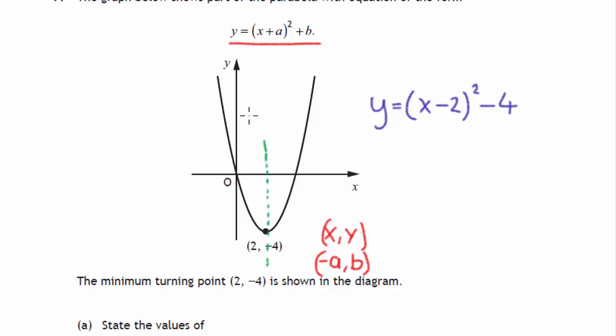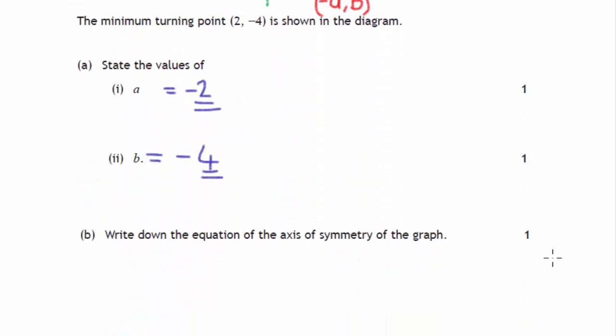And the line of symmetry is just equal to the x coordinate of the turning point, so that's x equal to 2. So that's the answer to question 7.